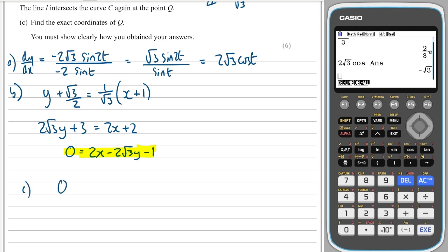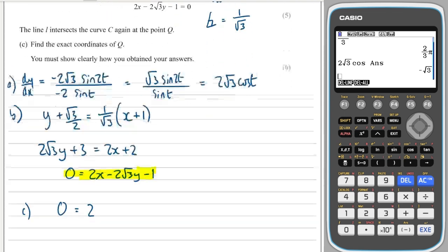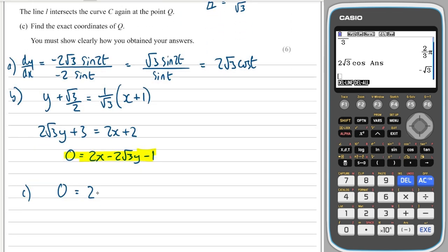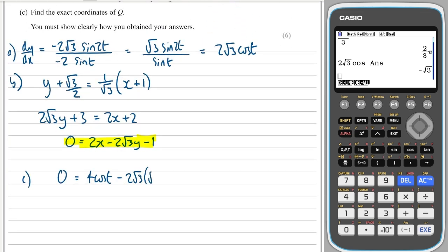So for part c I get 0 equals 2 lots of the x, which was 2cos(t), so that makes 4cos(t) minus 2√3 times by the y, which is √3 cos(2t), which is √3 cos(2t) minus 1.